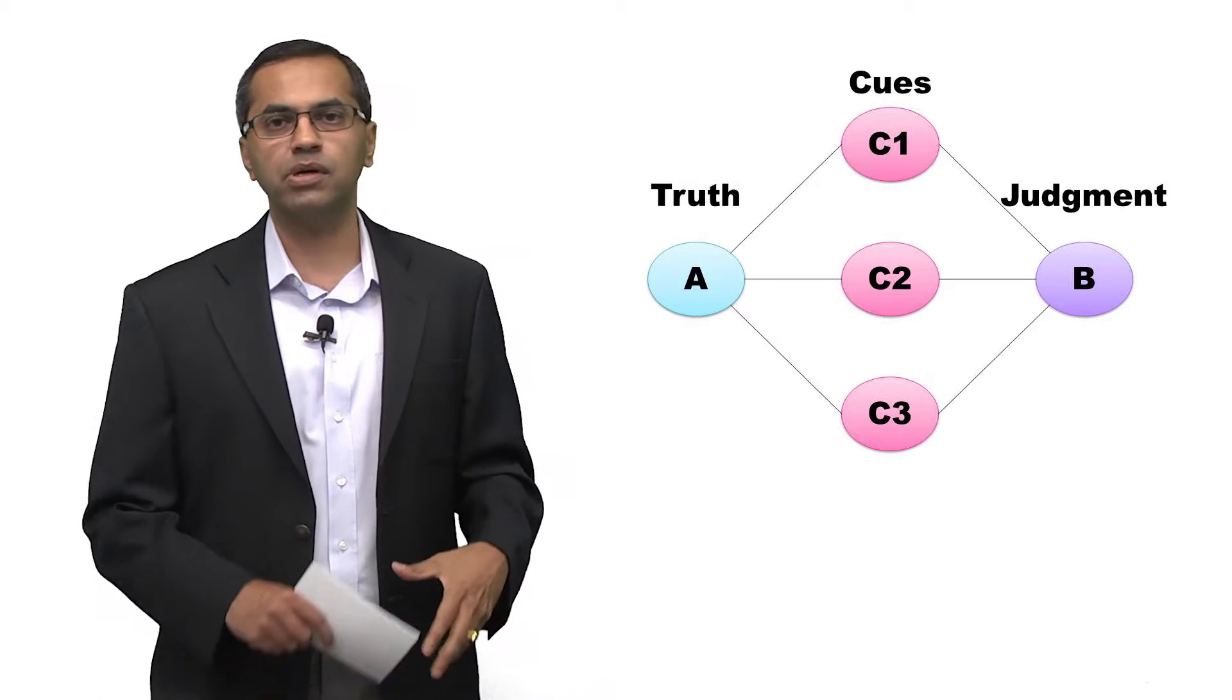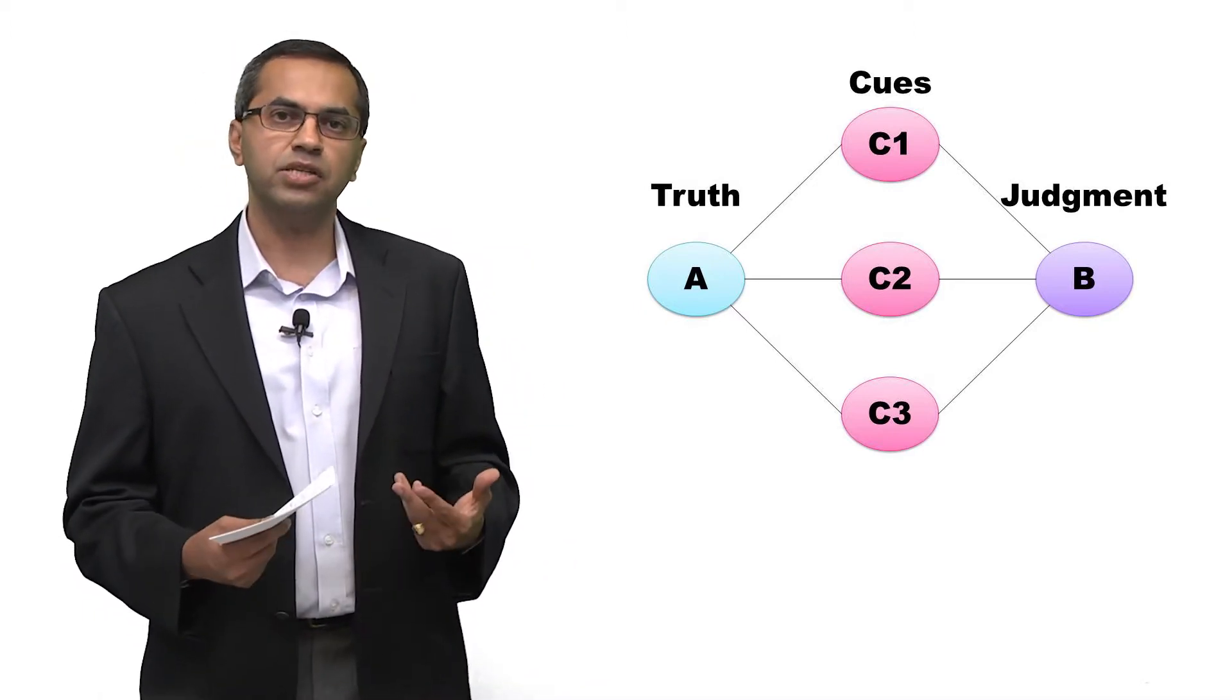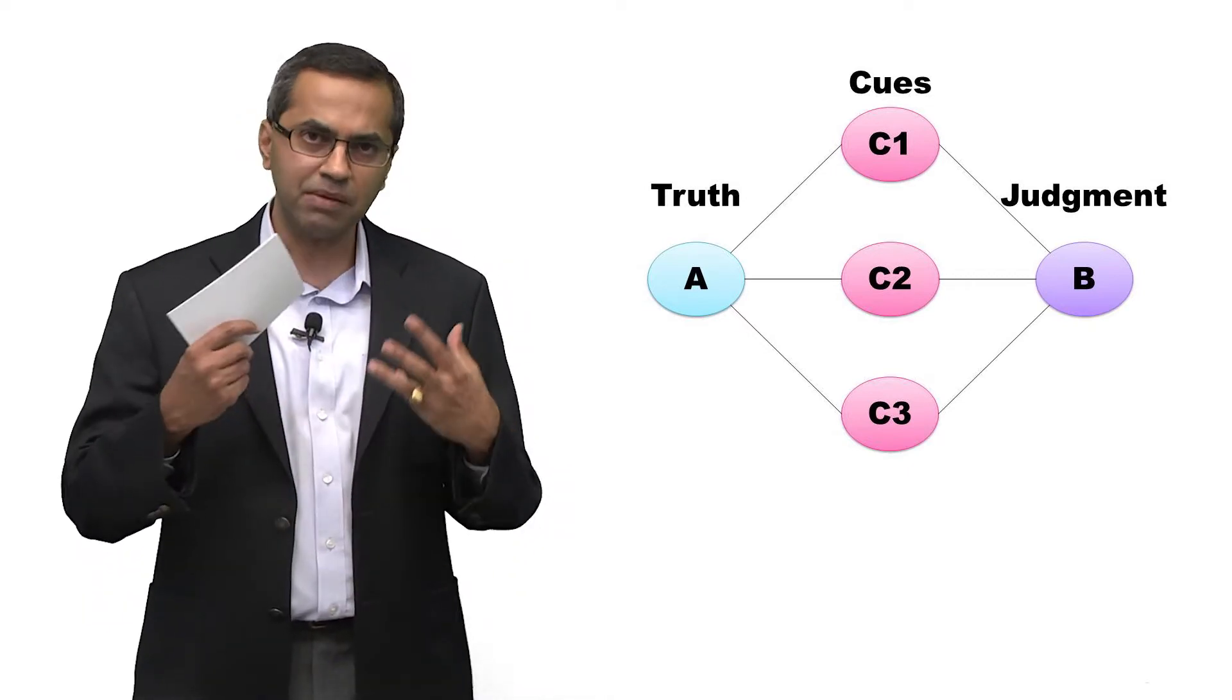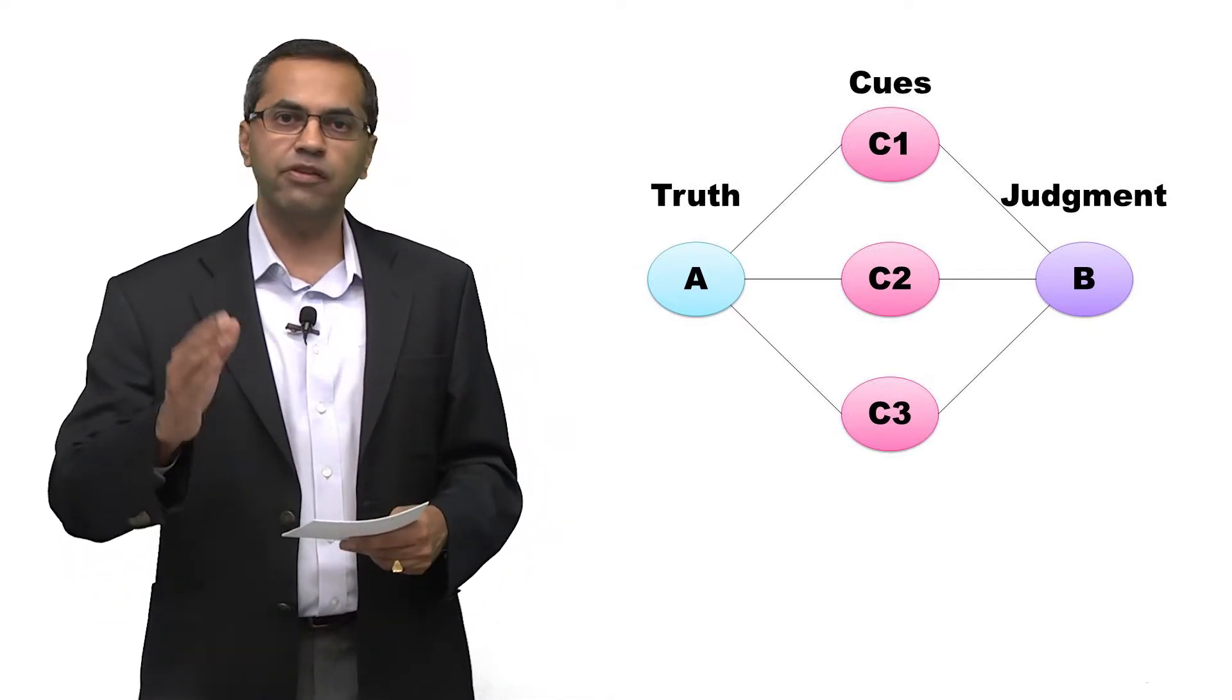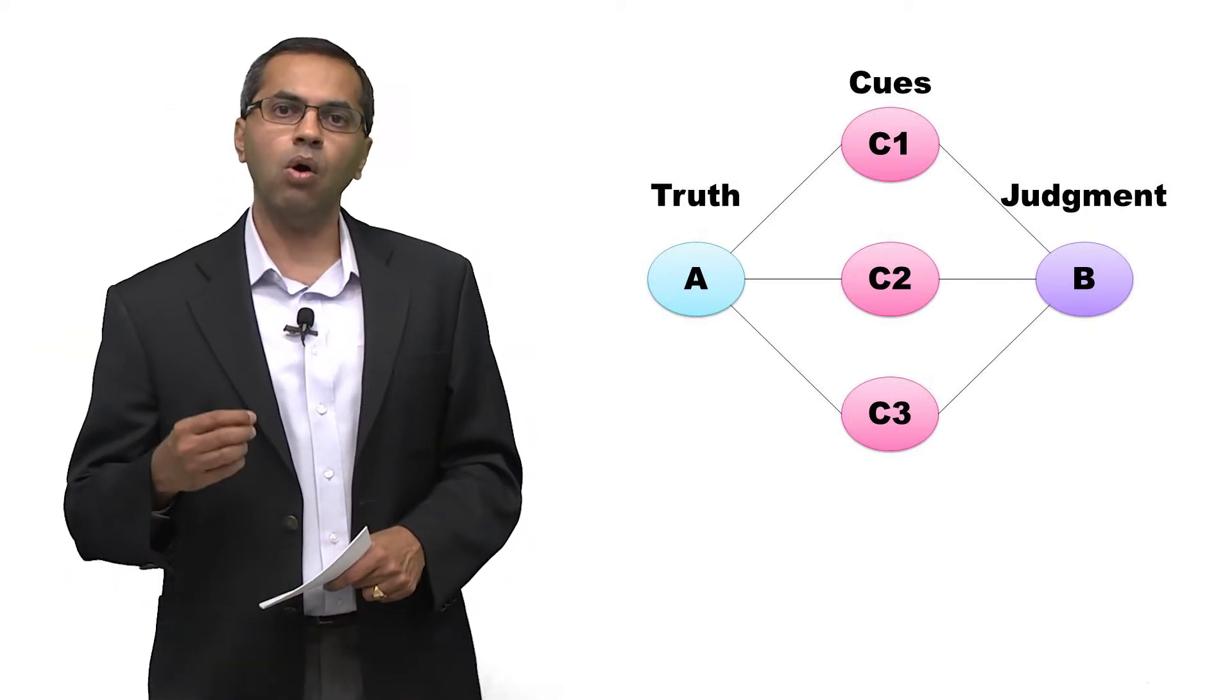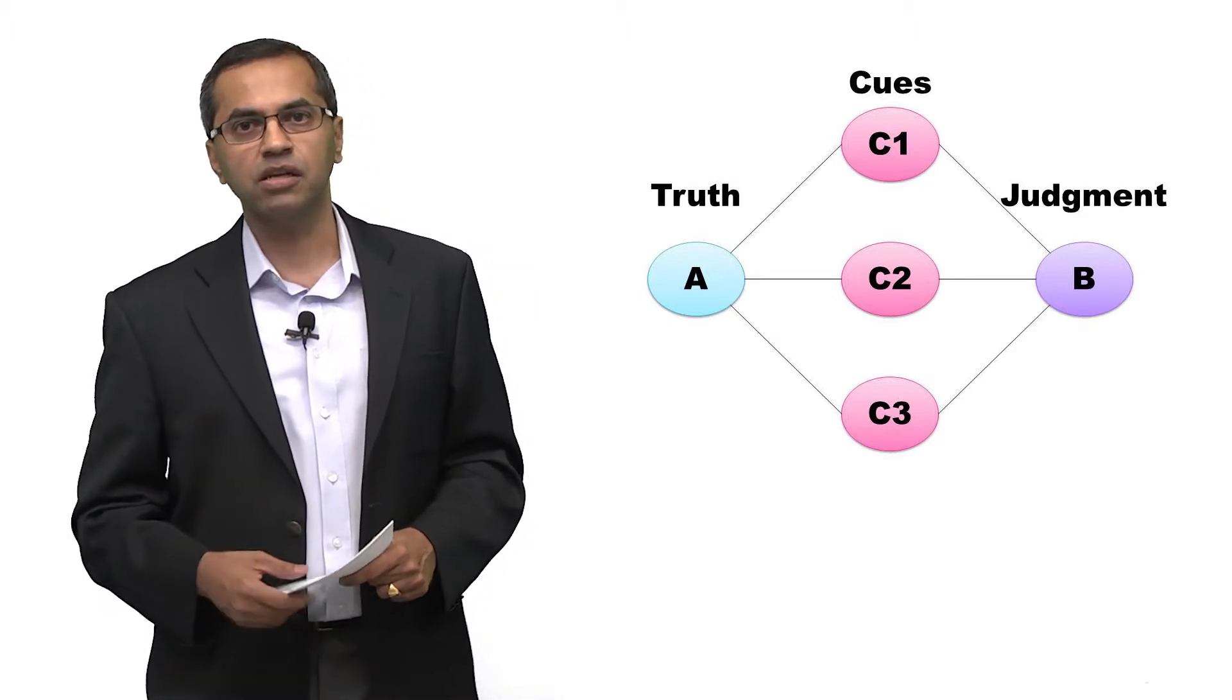Based on those cues, we somehow combine them to form a judgment. That combination could be based on intuition, as we talked about, where we somehow have some pattern in our head which says, if I see C1, C2, and C3, here's what's going to happen. Or you could have a systematic model to combine information from those cues.